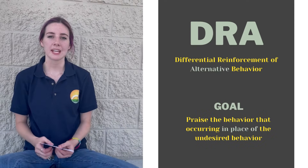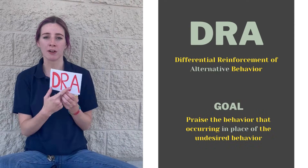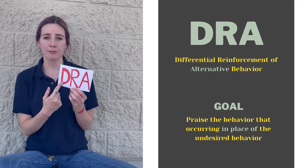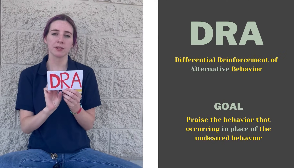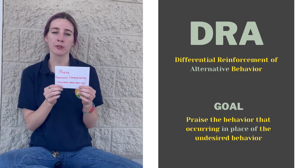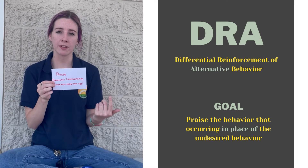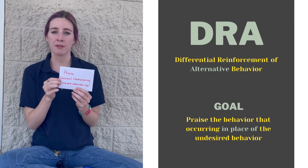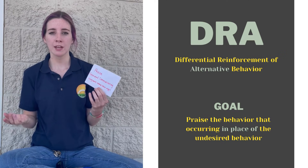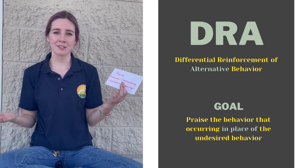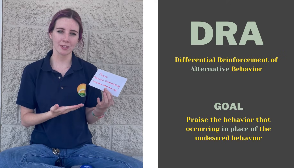The second type of differential reinforcement is called DRA — differential reinforcement of an alternative behavior. In this instance, we could praise functional communication and using their words to tell us how they feel. So rather than aggressing, if they choose to tell us they're feeling upset, we would say, hey dude, nice job using your words and talking to me about how you feel.